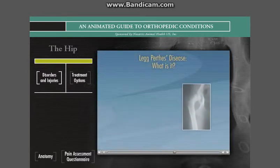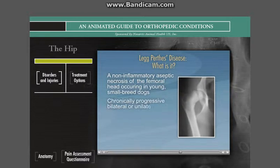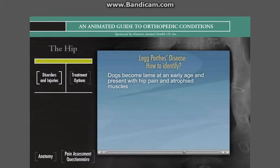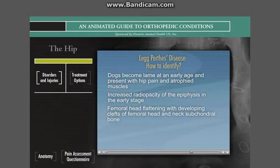Legg-Perthes disease, characterized as a non-inflammatory aseptic necrosis of the femoral head, occurs in young, small-breed dogs. Dogs with Legg-Perthes disease present for chronically progressive bilateral or unilateral hind limb lameness associated with secondary osteoarthritis. They become lame at an early age and present with hip pain and atrophied muscles in the affected leg. Radiographs reveal increased radiopacity of the epiphysis in the early stage, progressing to femoral head flattening with developing clefts of femoral head and neck subchondral bone. In the advanced stage, the femoral head is grossly deformed and collapses.